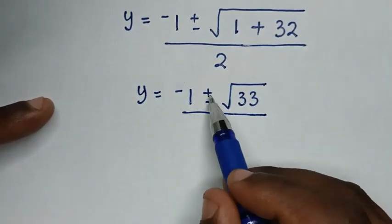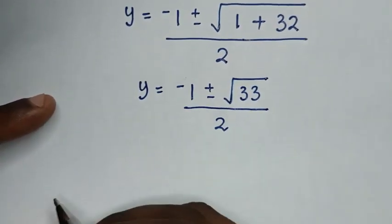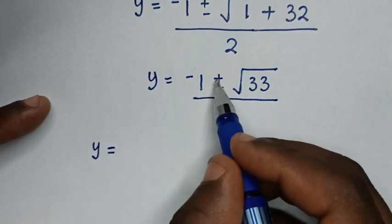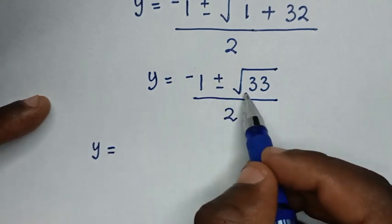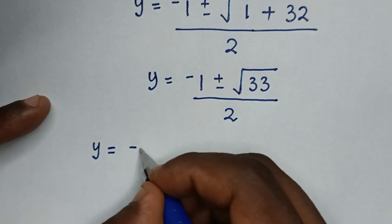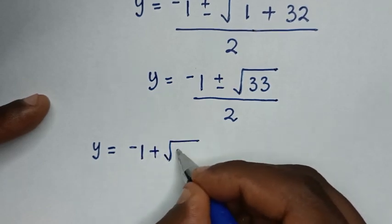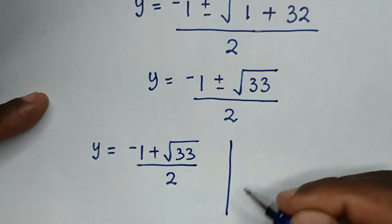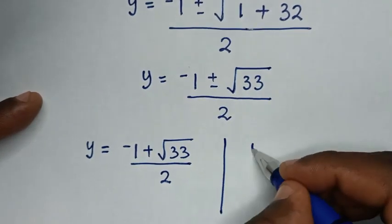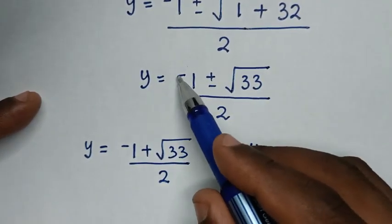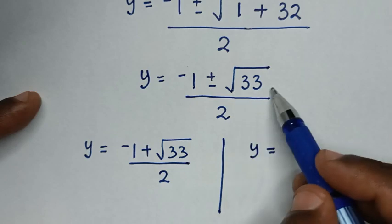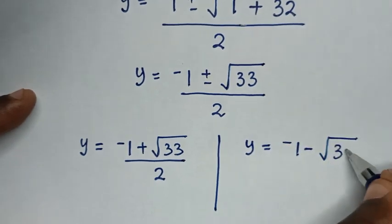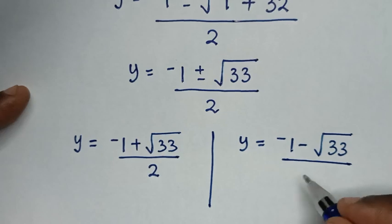So, from here, we have two solutions because of plus or minus. The first value of y, when it is positive, is negative 1 plus square root of 33a over 2a. And the second solution, when it is negative, it will be y is equal to negative 1 minus square root of 33a over 2a.